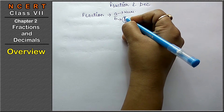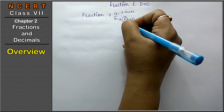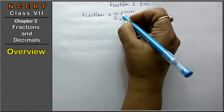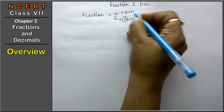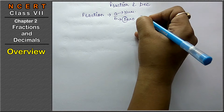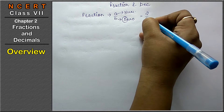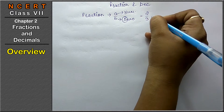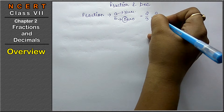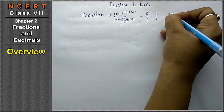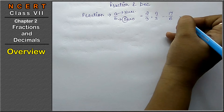A helpful mnemonic: D4 down — D4 down means denominator is at the bottom, and the upper part is the numerator. Fractions may be in the form of 2 upon 3, 3 upon 5, 17 upon 6, and many more.